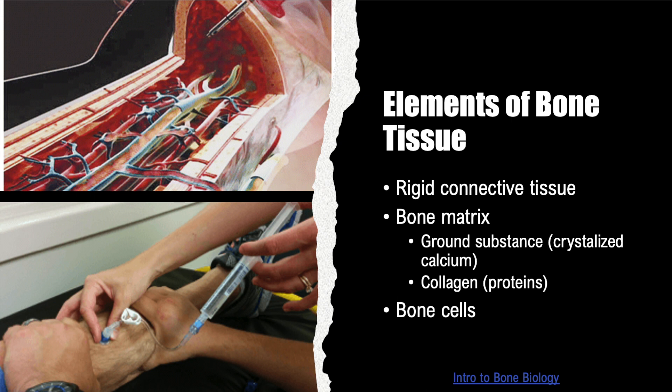Bones consist of a gelatinous combination of glycoproteins and bone cells. Bone rigidity is primarily from crystallized calcium and other mineral components. This combination of minerals, collagen, and other proteins allow for the primary properties of osseous connective tissues: length and strength. These properties allow for weight-bearing activities.